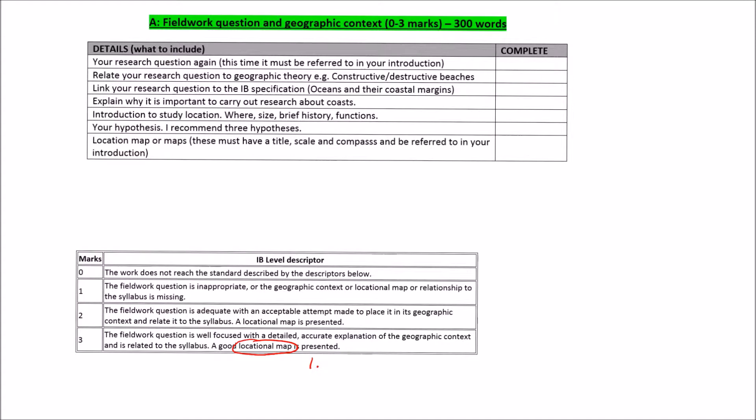For it to be a good locational map, it needs to meet three criteria. Number one, it needs to show the country that you are looking at. Number two, it needs to show the region that you are looking at. And number three, it should also potentially show the exact location of your study. If you meet these three criteria and your map includes things like a compass and a scale, then you'll be classified as a good locational map.